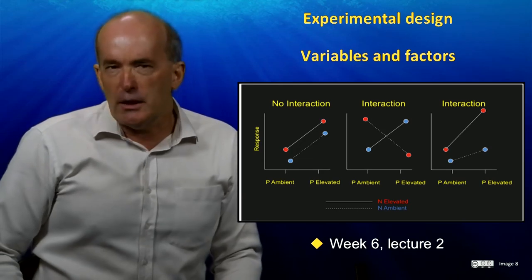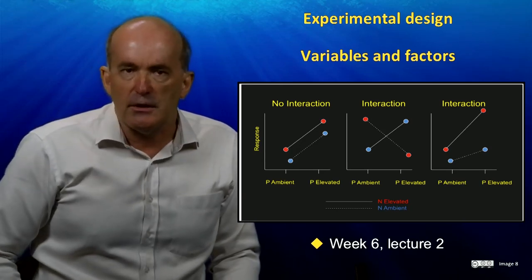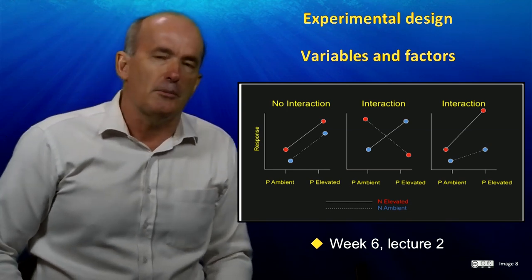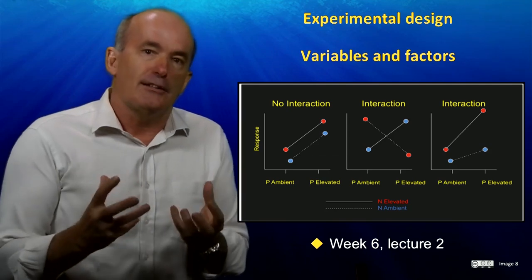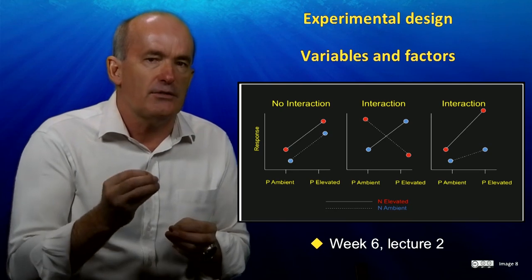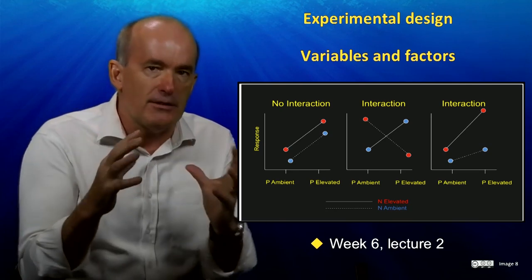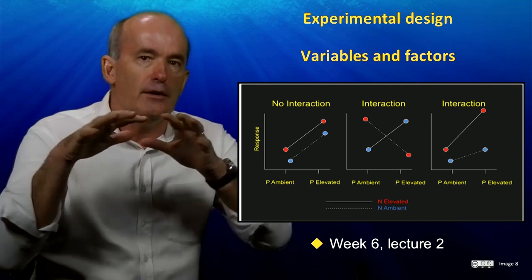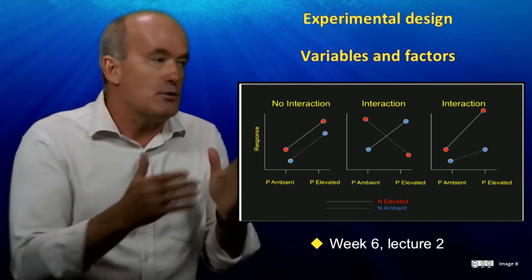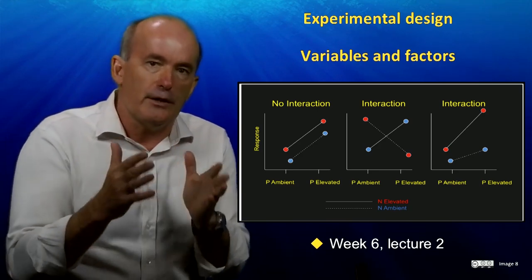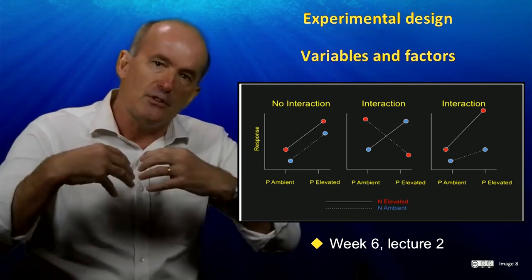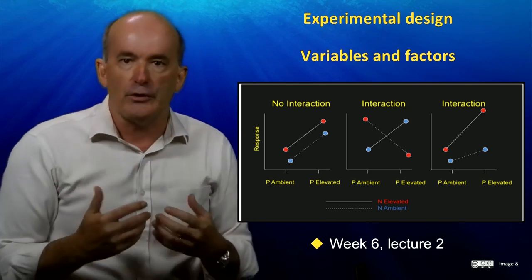We learned the importance of ensuring that background conditions — namely the conditions which your study is not focused on — were uniform across your experiment. We saw how an experimental factor can have multiple levels. For example, if your experiment was designed to test how the factor sex affects an animal's body size, you would have two factor levels: male and female. We've also seen how factors can interact with each other, such that one factor can affect your response variable one way when acting alone, but can produce a different effect when another factor is also present.